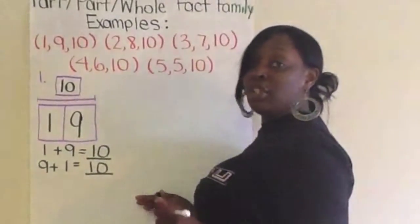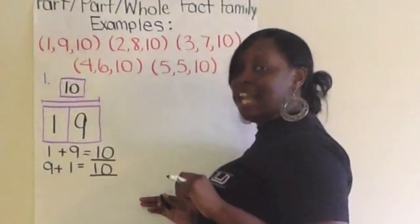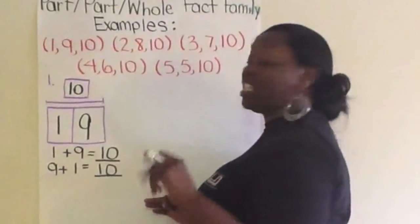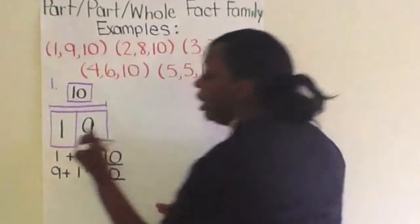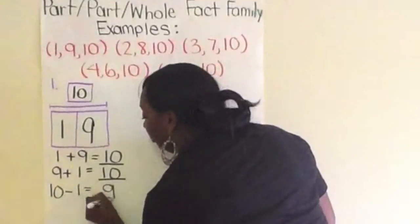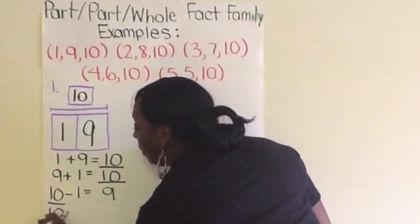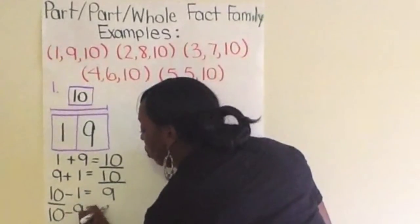Now, we're going to do the two related subtraction problems. Where does the whole number go then? That's exactly right, at the beginning. So, let's see the two related subtraction problems. 10 minus 1 equals 9. And 10 minus 9 equals 1.